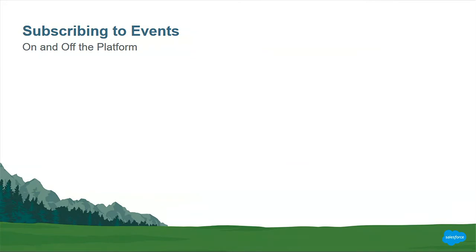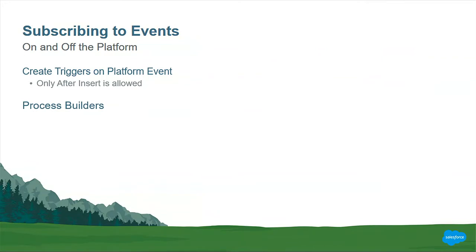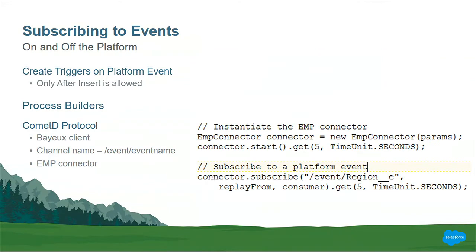For subscribing to events, the good news is we can create an after-insert trigger on platform events, which is something not yet available in Streaming API. Out-of-box features like process builders can also be used. Outside of Salesforce, we use what is called the CometD protocol. CometD is a scalable web event routing bus, and it makes use of a base client protocol. Typically, how you subscribe is by using the channel name as /event/ followed by the event name that you created. Java folks may be familiar with EMP connectors — that's another way to subscribe to events.